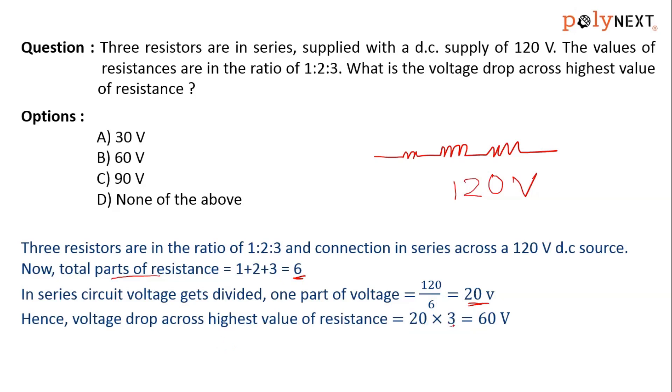Why have we taken three? The reason is three parts is the highest part. So 20 times 3 is 60 volts. Out of 120 volts, 60 volts will be available across the highest part of resistance, which is three parts.